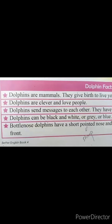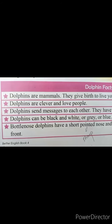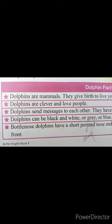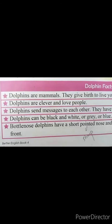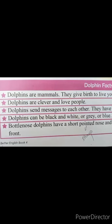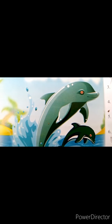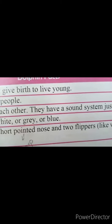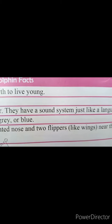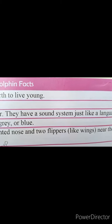Dolphins can be black and white, or grey and blue. Bottle-nose dolphins have a short pointed nose — it is like a bottle. Pointed means sharp. They have two flippers like wings near the front.